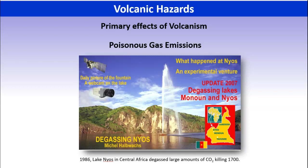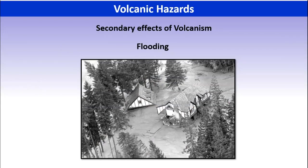There are other gases — sulfuric acid and other types of gases — that can be emitted that we can test and look for, but you want to be aware. This is an example of a place where a lot of CO2 was released from a volcano, settled into a low-lying area, and impacted a lot of people.